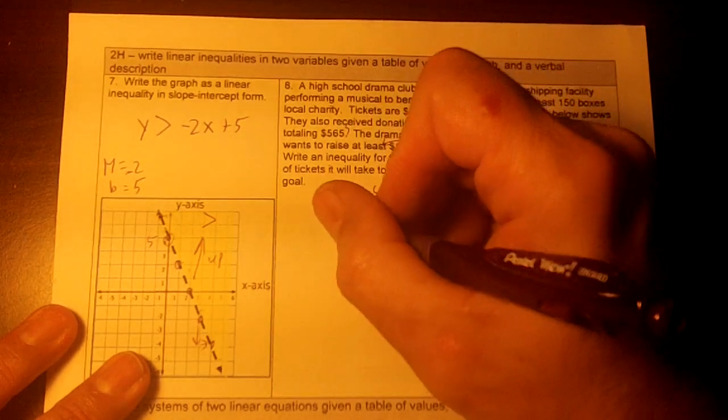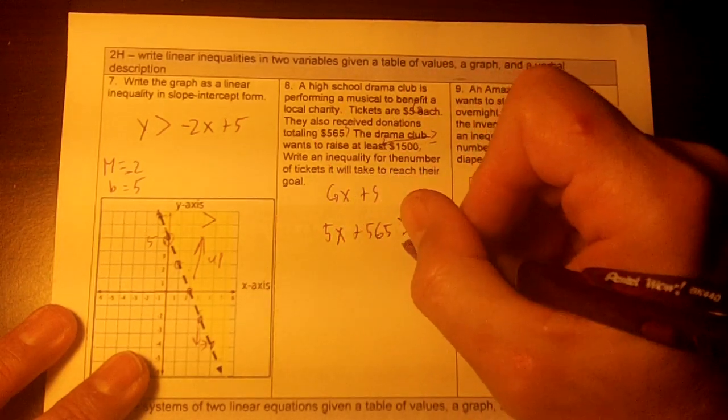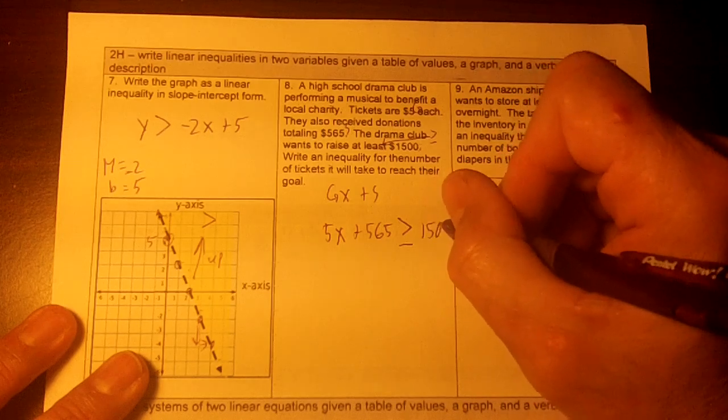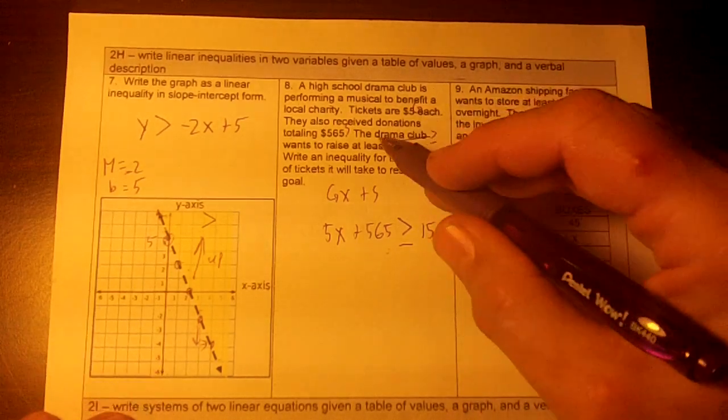Okay, so we're going to have 5x. We start off with $865, and we want this to be greater than or equal to $1,500. This is the inequality that is generated from this.